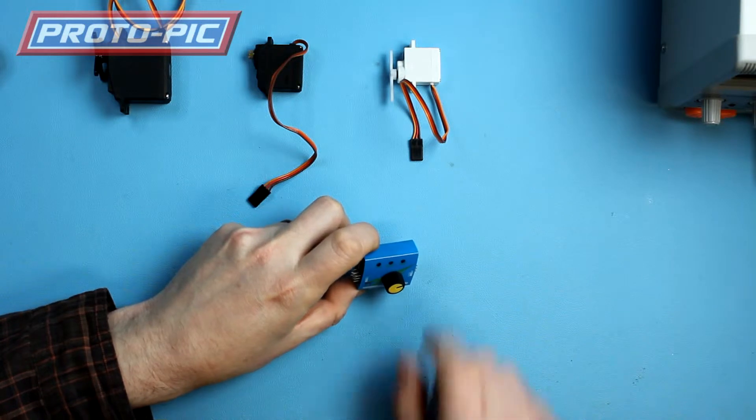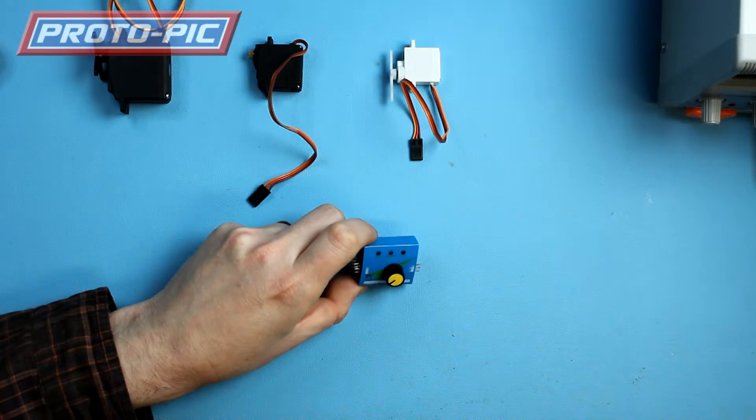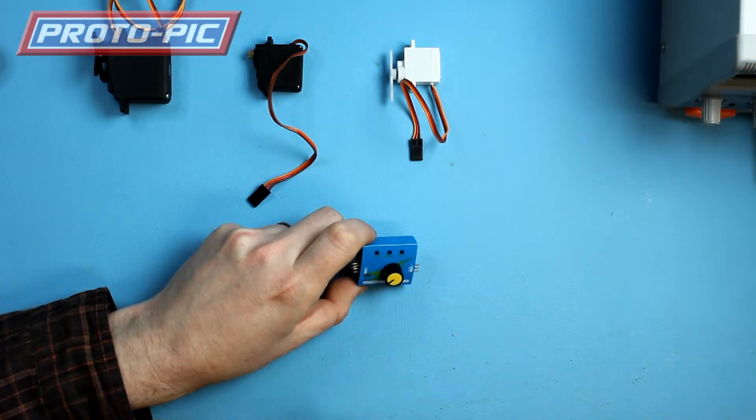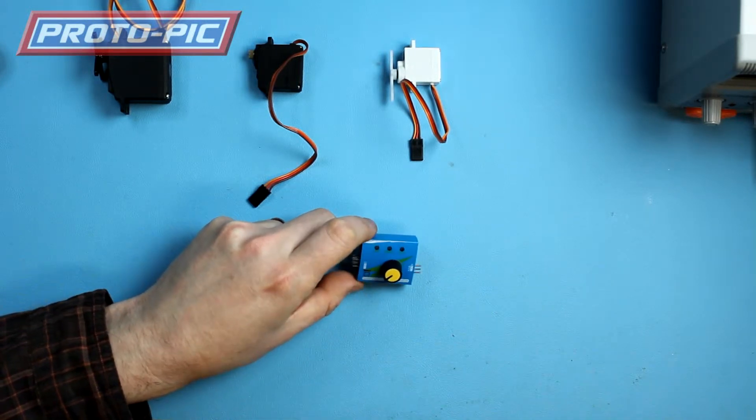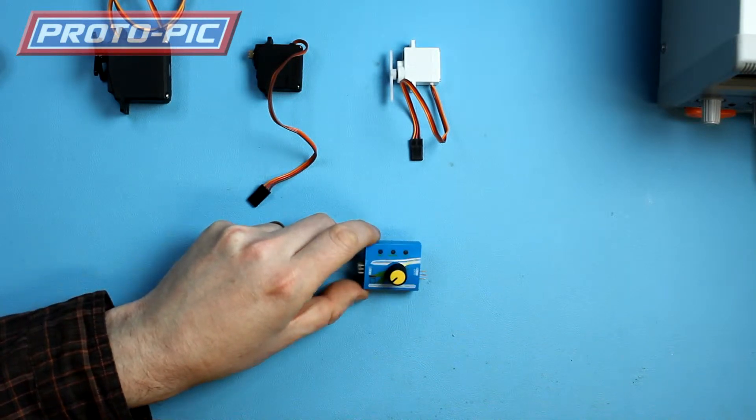And it's got several different modes. It's got a manual mode, so as you're turning the pot knob there, you're turning the servo. It's got a neutral mode - when you press that it will drive the servo to its neutral position. Then it's got an auto mode which just drives the servo back and forward all the time.